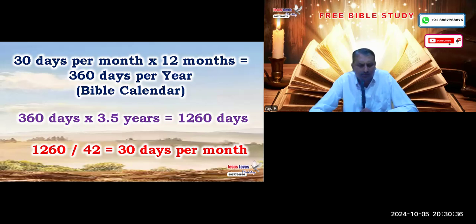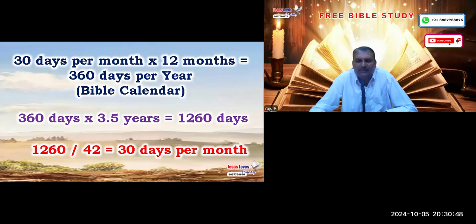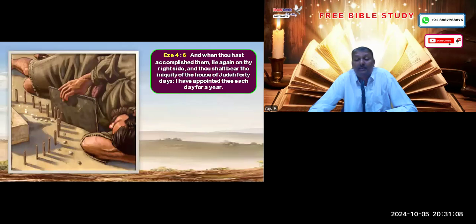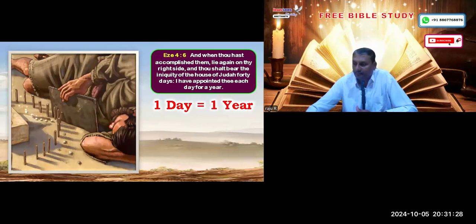This 1,260-day period represents the period of the Antichrist. But Antichrist — the Pope — ruled far more than a literal three and a half years. This is prophetic language, because in prophecy one day equals one year, as given in Ezekiel 4:6: 'I have appointed thee each day for a year.' Therefore 1,260 prophetic days equals 1,260 years.